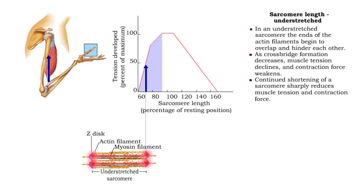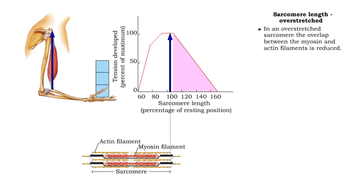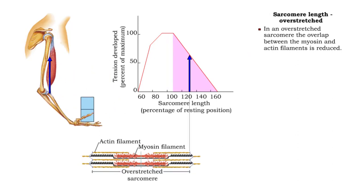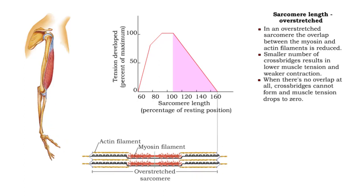When the sarcomere is stretched beyond the ideal length, there is less overlap between the myosin and actin filaments. As a result, crossbridge formation is substantially diminished, muscle tension decreases, and contraction weakens. In the extreme case, when a sarcomere is stretched to the point where no overlap exists, crossbridges cannot form, and muscle tension drops to zero.